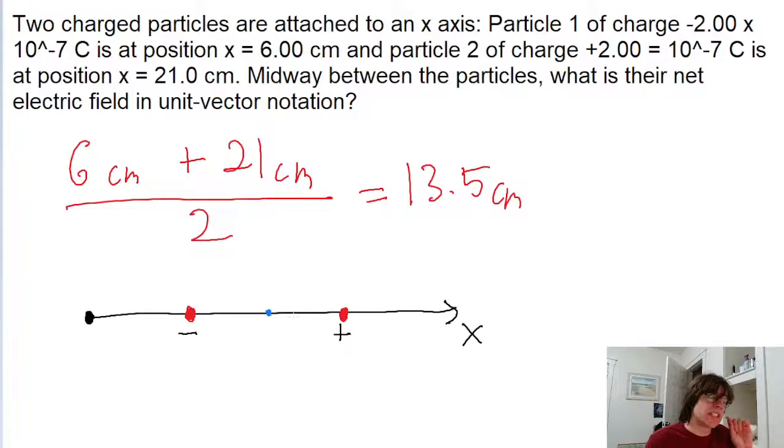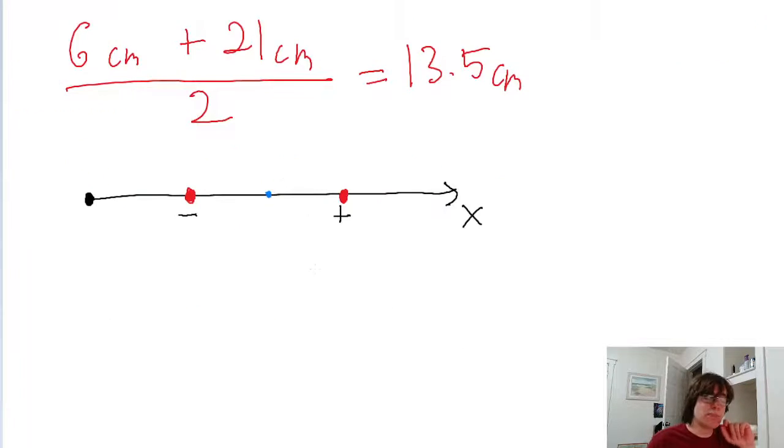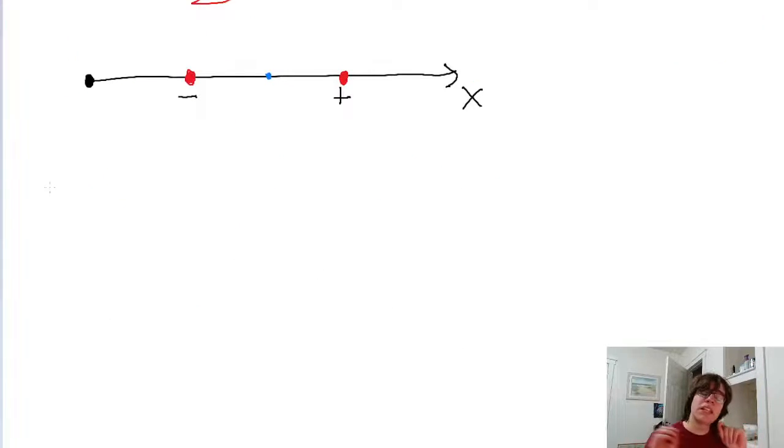Remember, the problem is asking for the net electric field at this midpoint. So let's begin by writing a formula for the electric field due to particle one. Now remember, the electric field due to a point charge is equal to the magnitude of the charge. So Q1. So this is charge one, and this is charge two.